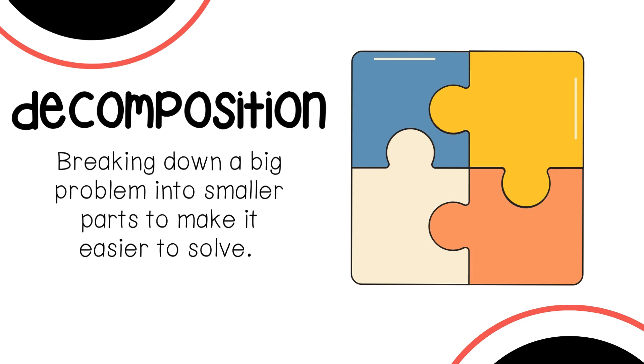Decomposition means breaking down a big problem into smaller parts to make it easier to solve. In coding, decomposition means breaking a big problem into smaller, easier steps. For example, in a game, you might write separate code for moving a character, jumping, and collecting coins. Each small part is simpler to code, and together, they make the whole game work.